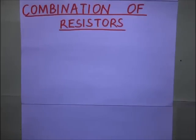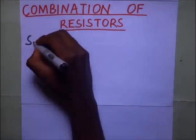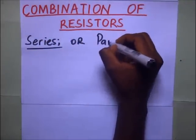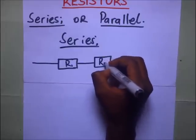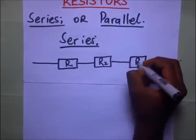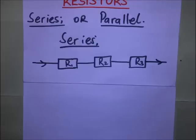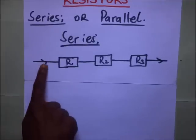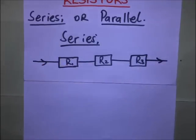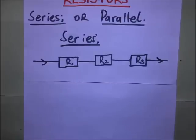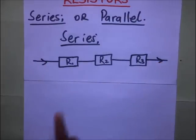Resistors can be combined in two ways: you can either combine them in series or in parallel. Here we have resistor one, resistor two, and resistor three. One thing about resistors in series is that they will always have the same current going through them, but even though they have the same current, the potential drops across the respective resistors are going to be different.